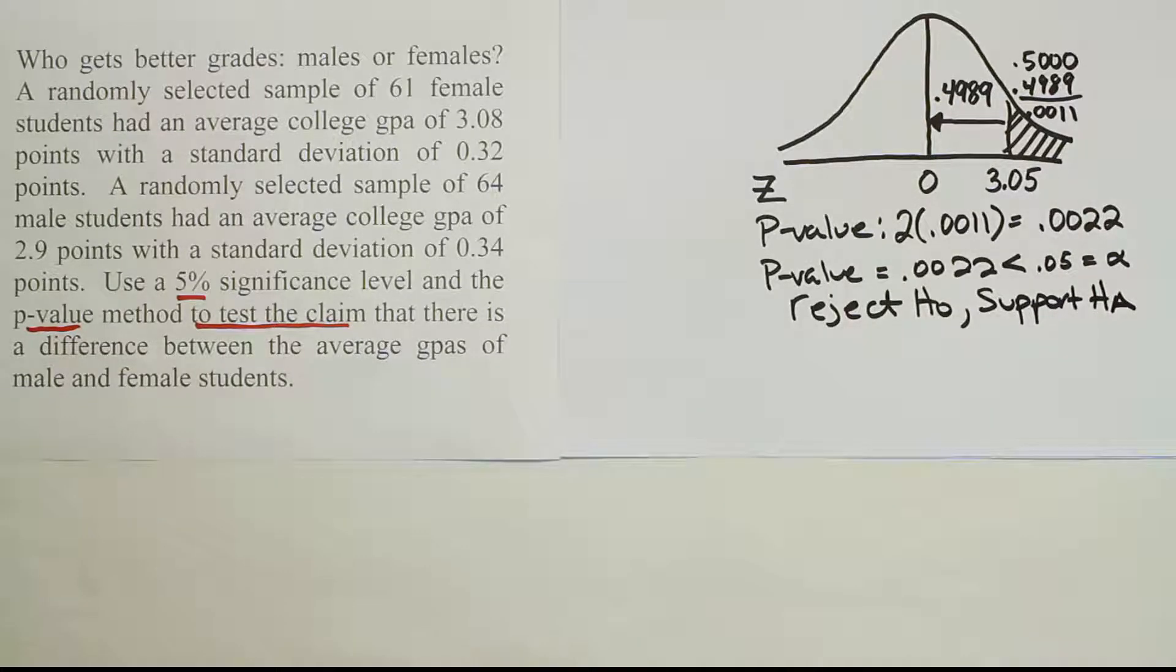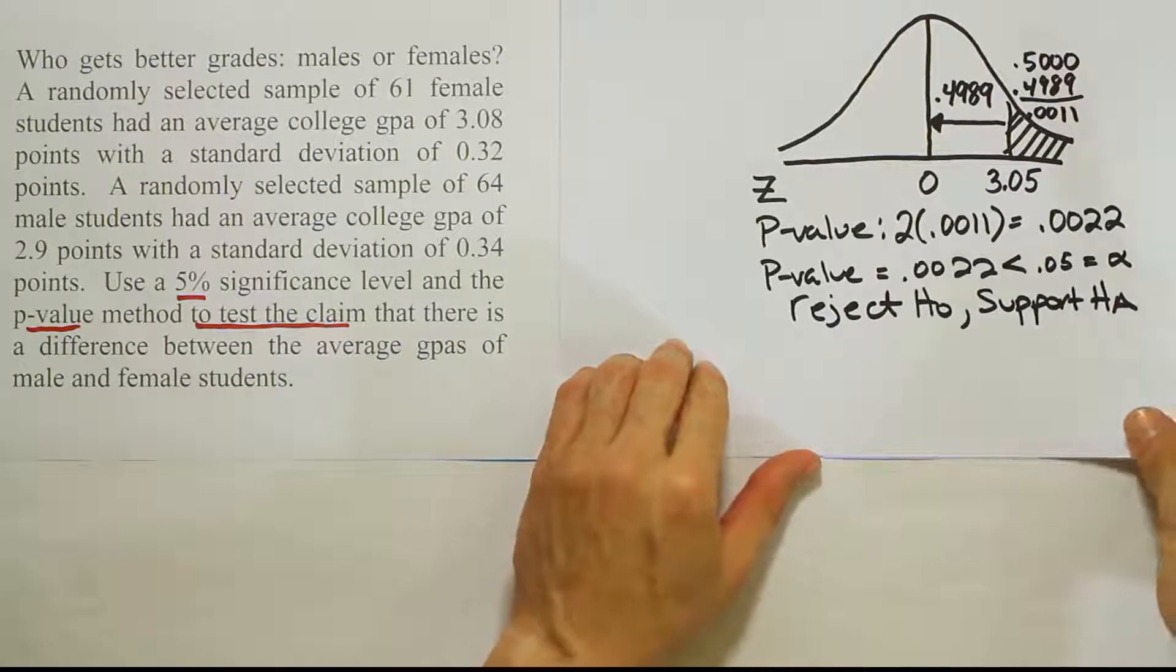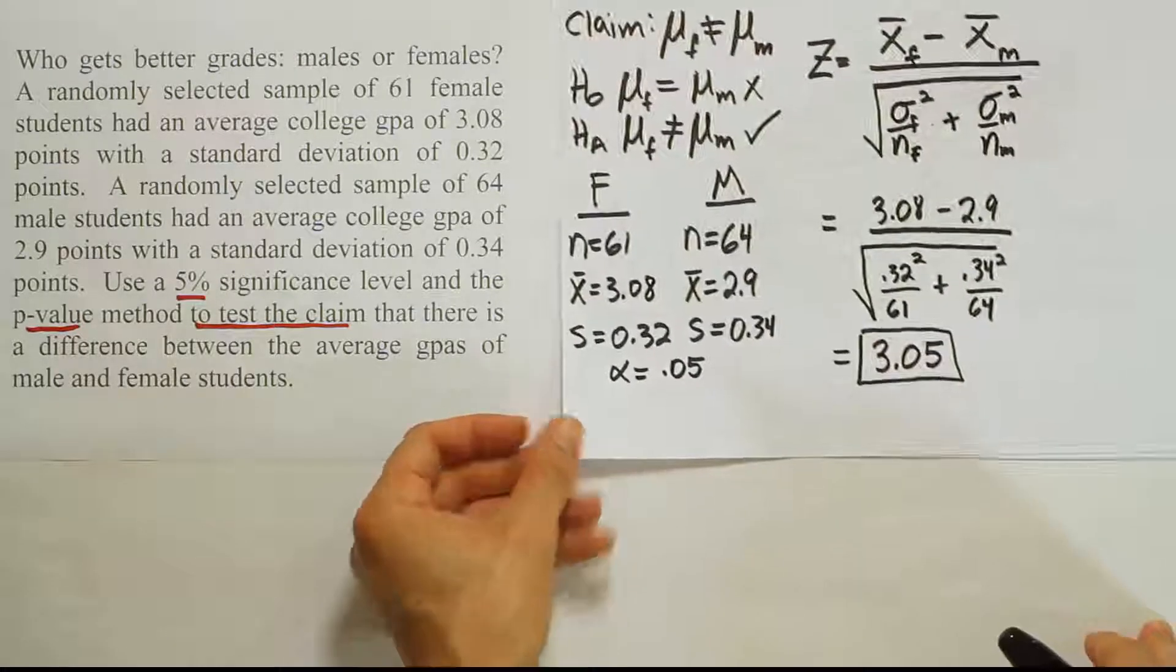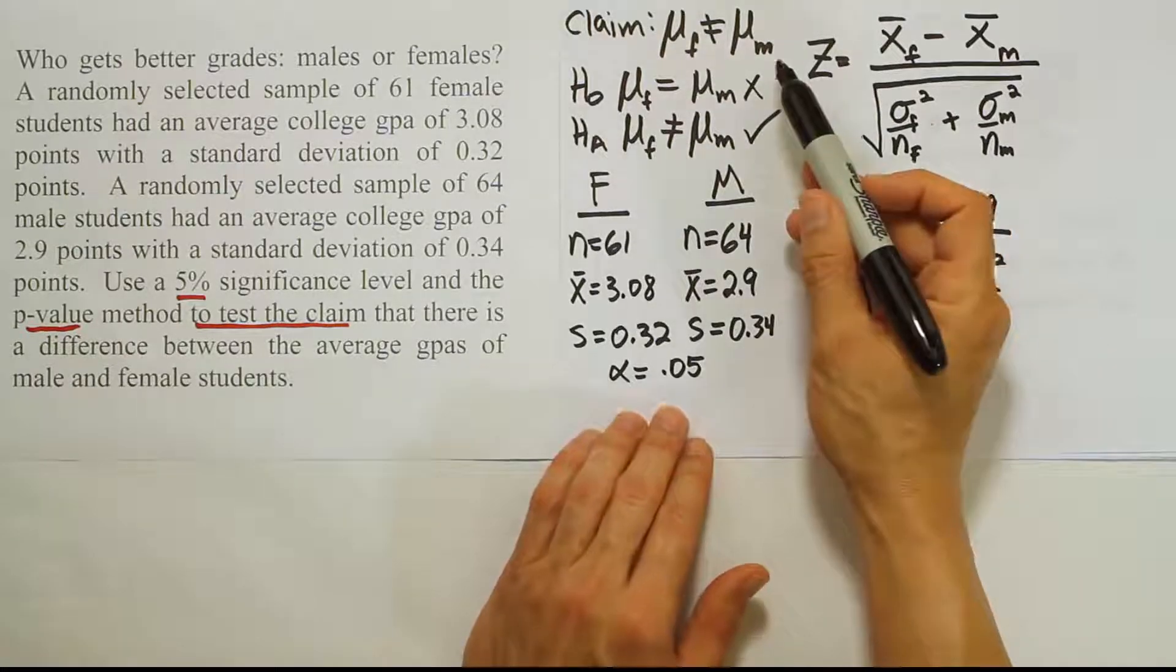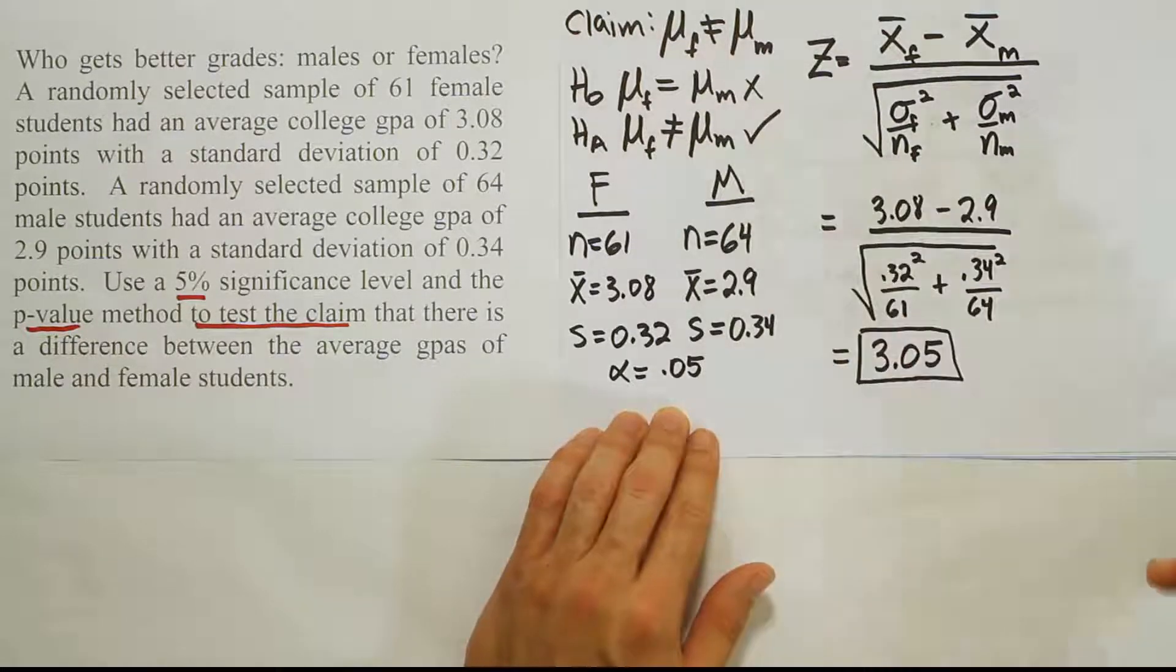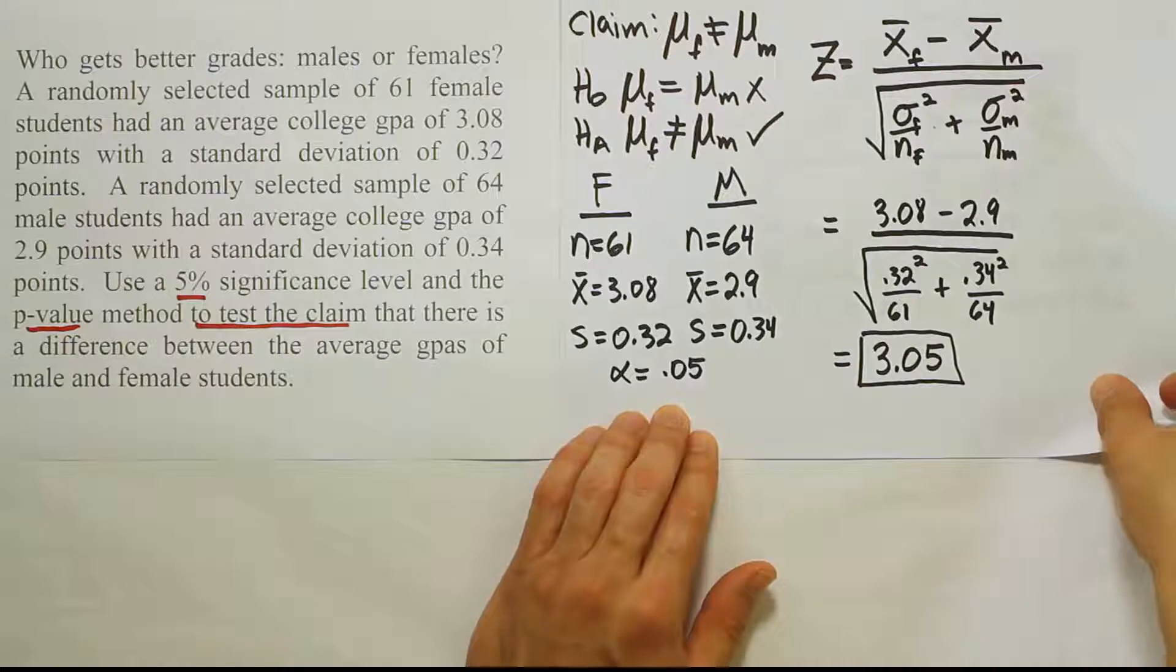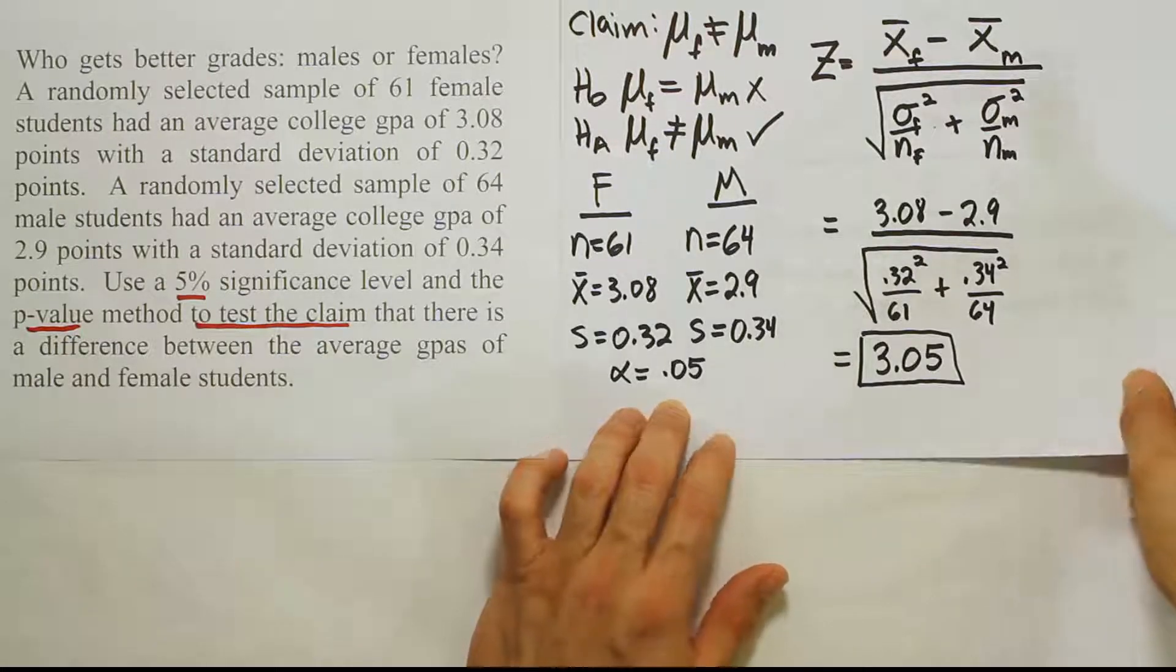Remember that if we reject H0, we support HA. And when we go back to our original problem, we see that in the original problem, the claim here that we were dealing with, the claim here was HA. So that means we're going to support HA and reject H0 as a consequence. So we're going to say that the sample data support the claim that there is a difference between the GPAs on average for females and the GPAs on average for males.